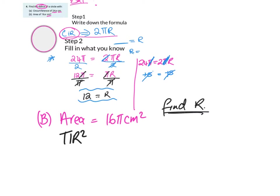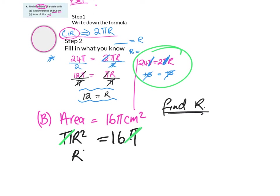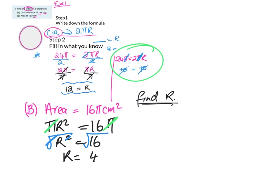Step two, fill in what you know: 16π = πr². Since π appears on both sides as a multiplier, we can cancel them, giving r² = 16. To get r, we square root both sides — the square and square root cancel — leaving r = √16 = 4.